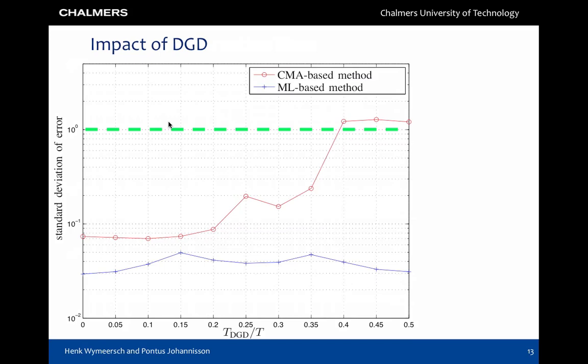Finally, we evaluate the robustness to differential group delay for the 300 kilometer link and an SNR of 9.8 dB, corresponding to a beta rate of approximately 10 to the minus 3. Due to the search over a finite set of matrices, we expect the ML-based estimator to have degraded performances as the DGD is increased. This is correlated by the results, though the degradation is minimal. In contrast, the CMA-based estimator has significant degradations for large DGD values.